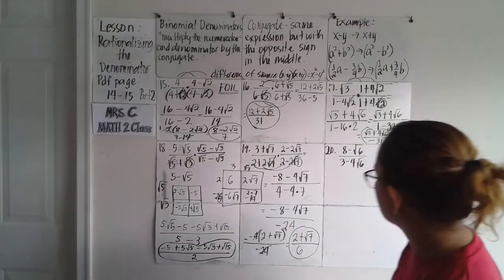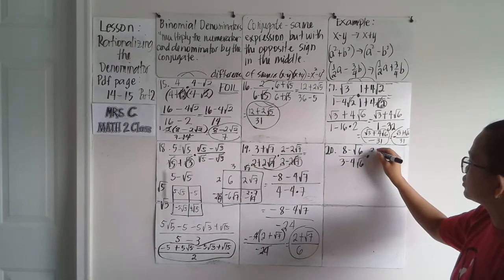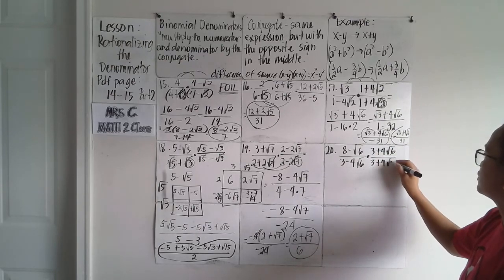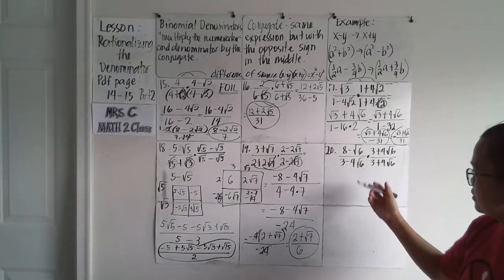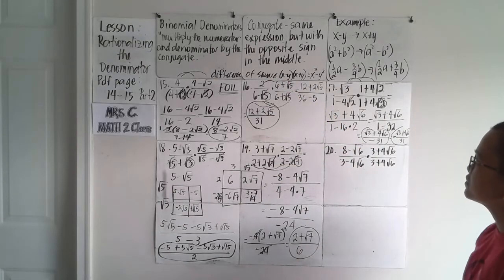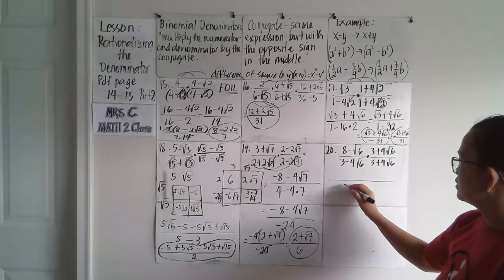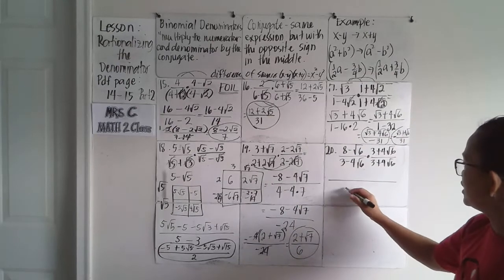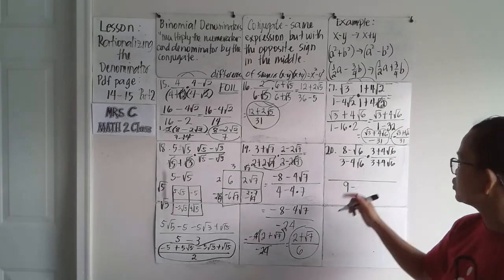I still have one more. Multiply by the conjugate of the denominator, which is three plus four square root of six over three plus four square root of six. Use the box or FOIL method for the numerator and the difference of squares for the denominator. We're running out of time — I may not finish this one fully, but I will comment below with a picture of the final answer.